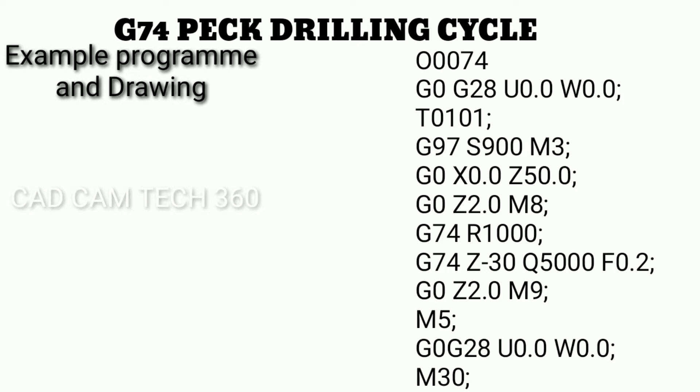Next is G0 G28 U0.0 W0.0, which is the home position of the machine. Then T0101 — the first 01 is the tool number and the second 01 is the offset number.